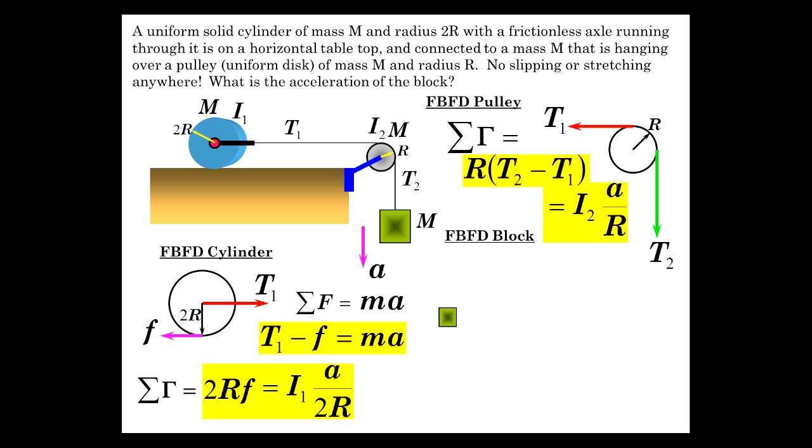And finally, we have the free body for the block. So here's the block. T2, Mg, Mg wins. Actually, it's Mg that's accelerating the whole thing. Mg minus T2 is M A. So we really have four equations to solve.